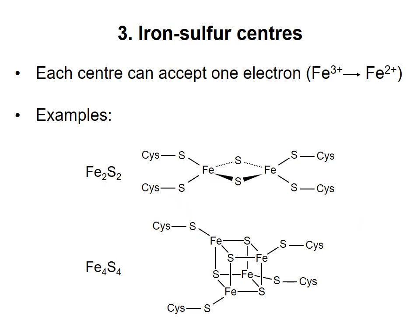As the name suggests, iron-sulfur centers contain iron ions coordinated by sulfur atoms. A number of different types of iron-sulfur centers exist; two examples are shown here. Some of the sulfur atoms are in the side chains of the amino acid cysteine, and others are individual sulfur atoms bound to the iron. The metal ions are permanently associated with the protein. Now, no matter how many iron ions exist in the iron-sulfur center, each center can pick up only one electron at a time.